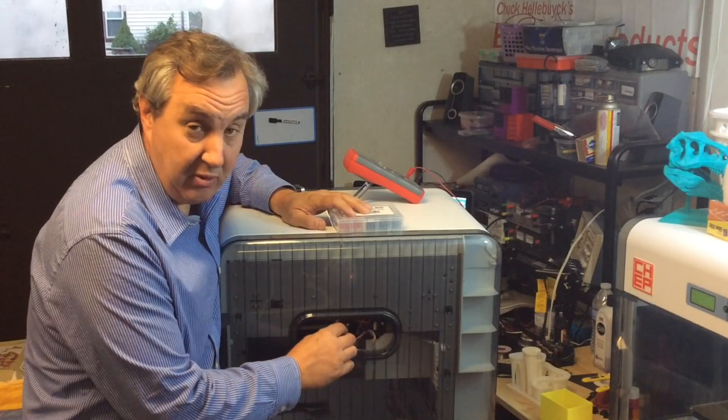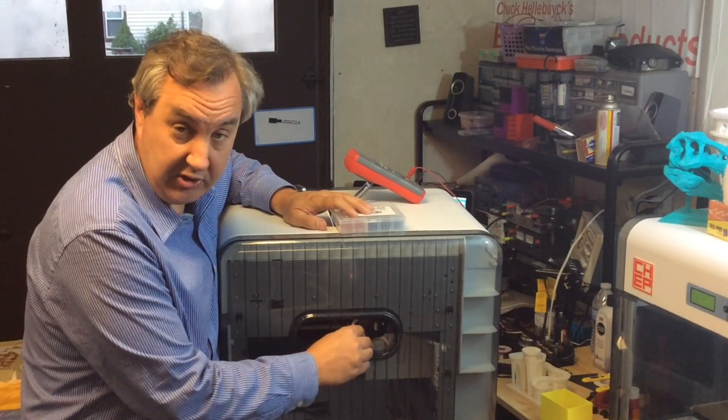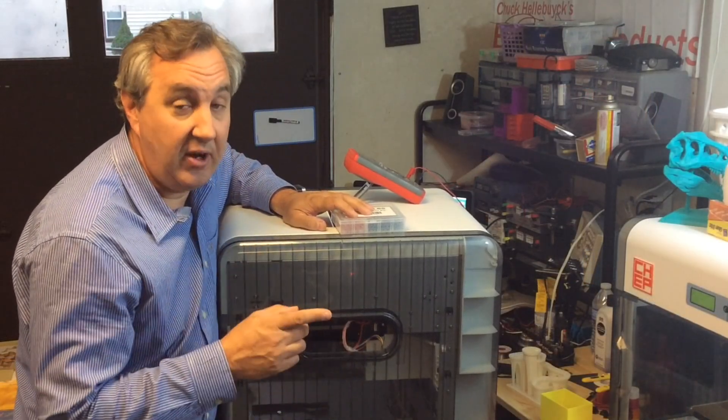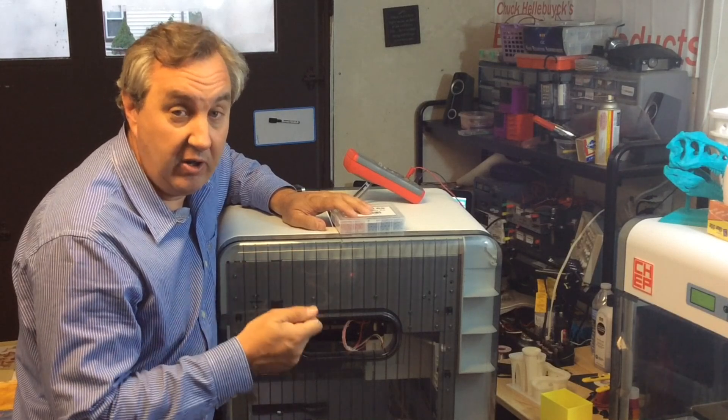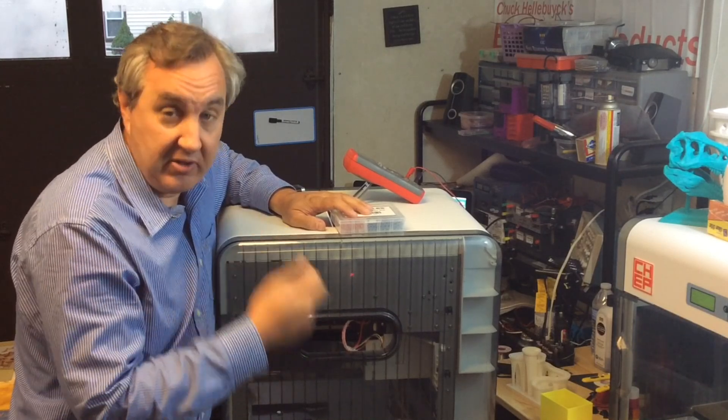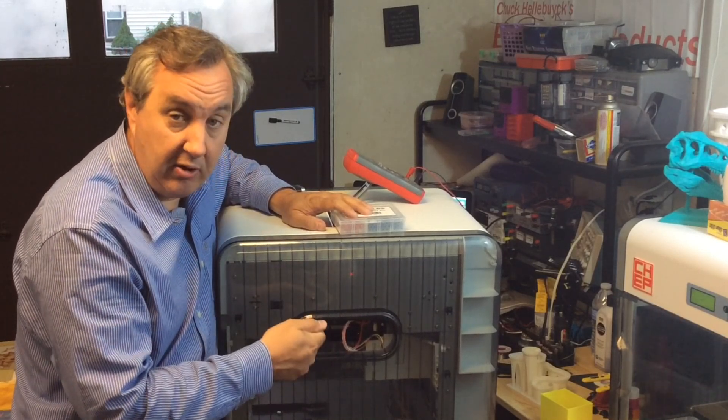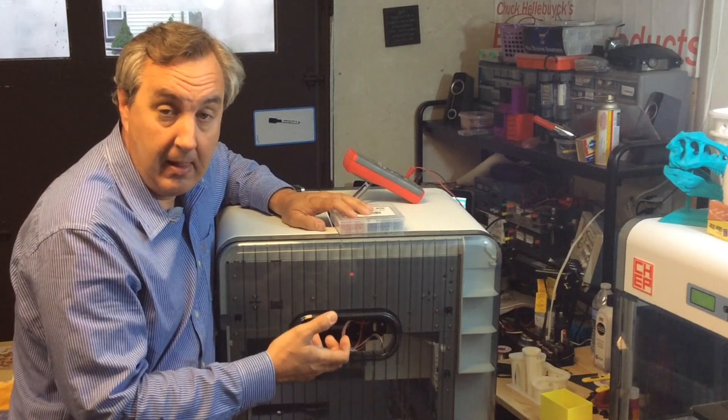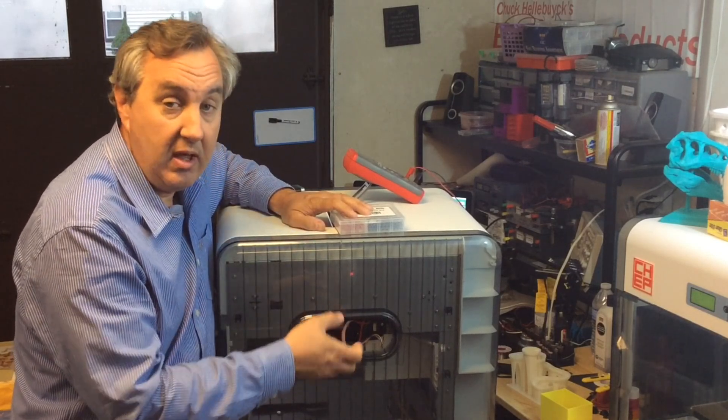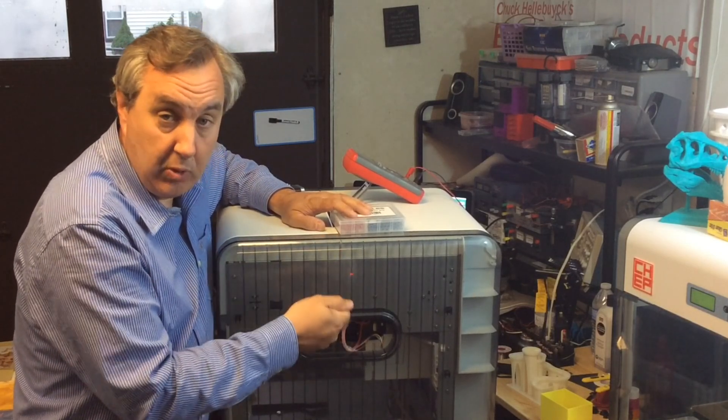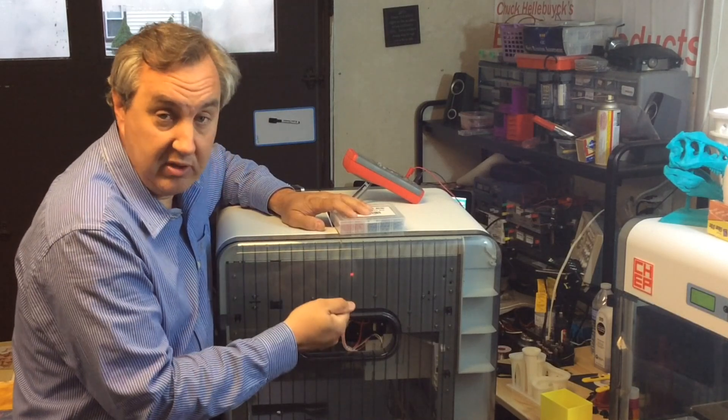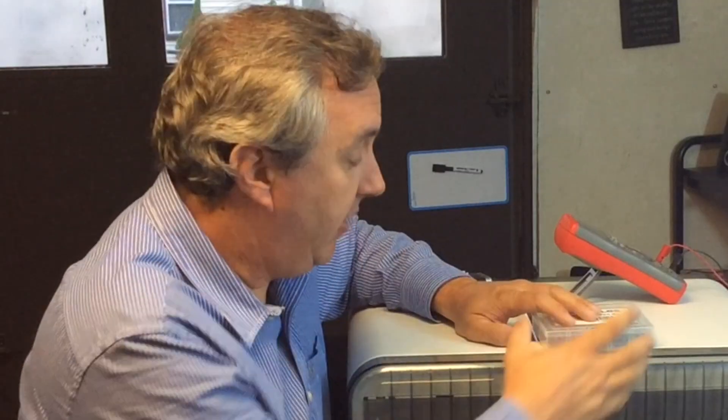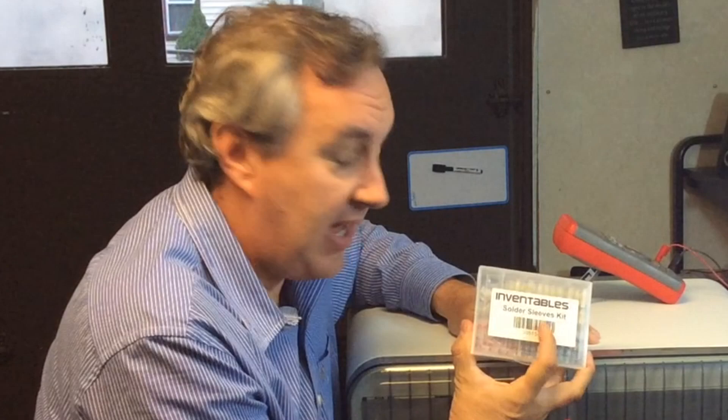So when you've got to fix a broken wire like this, especially one that's going to flex, you want to solder it. You want it to be a very good connection. So you've got to whip out the soldering iron, solder it together. You also got to get some shrink tubing and get the heat gun out and wrap it in that and shrink tube it so it's really protected and it's strong. Well that's where these Inventable solder sleeves come in handy because they take care of all of that in one part.